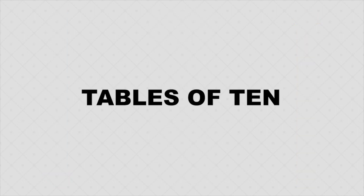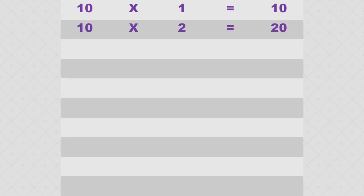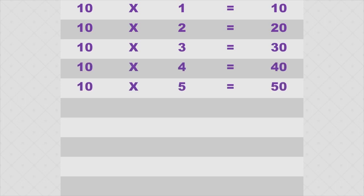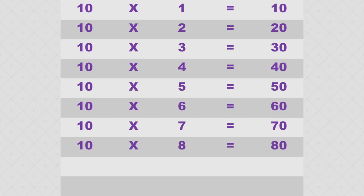Tables of 10. Let us check the tables of 10: 10 into 1 is 10, 10 into 2 is 20, 10 into 3 is 30, 10 into 4 is 40, 10 into 5 is 50, 10 into 6 is 60, 10 into 7 is 70, 10 into 8 is 80, 10 into 9 is 90, and 10 into 10 is 100.